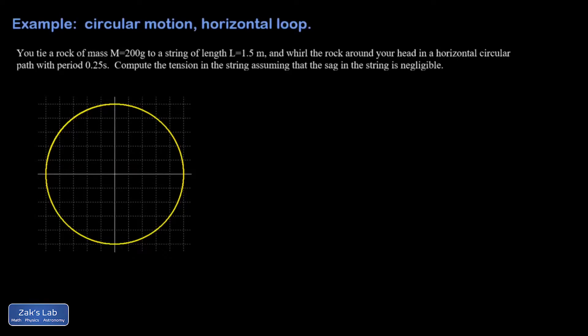Okay, this is the simplest type of uniform circular motion problem. I just tie a rock to a string and start swinging it around in a circle horizontally. So the mass of this thing, 200 grams, that's just 0.2 kilograms. I'm going to get my string on there, and the length of that is 1.5 meters, so L is 1.5.